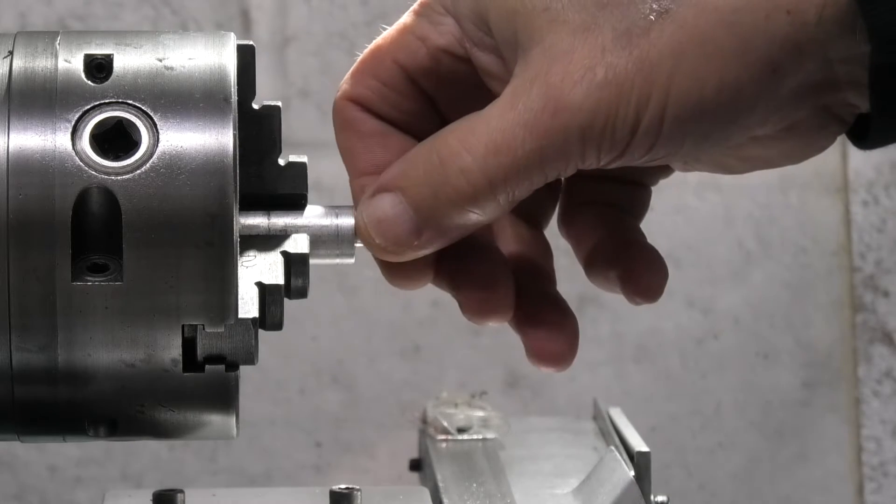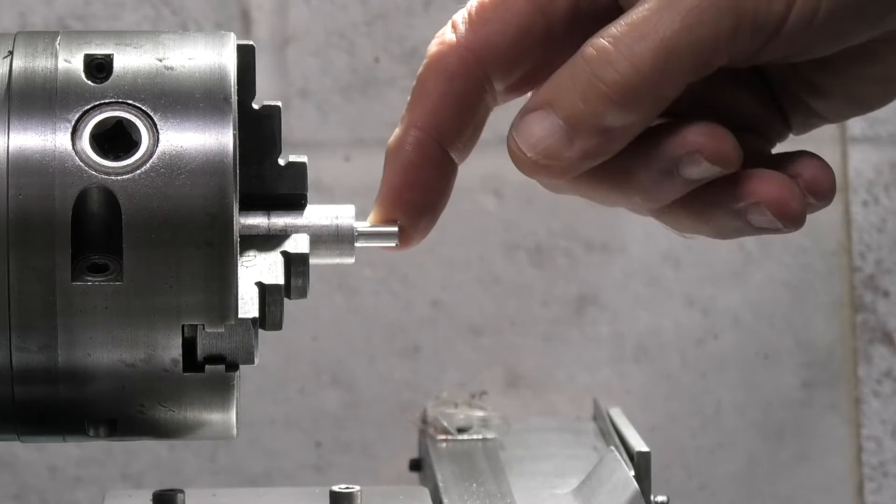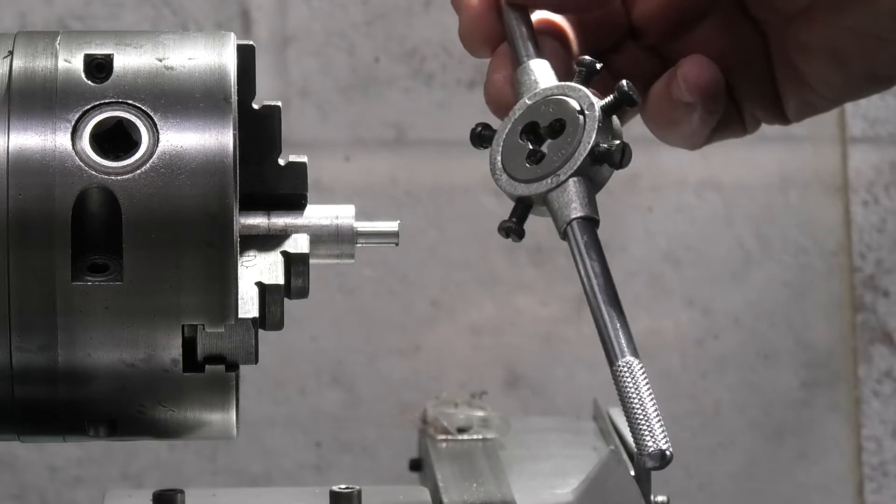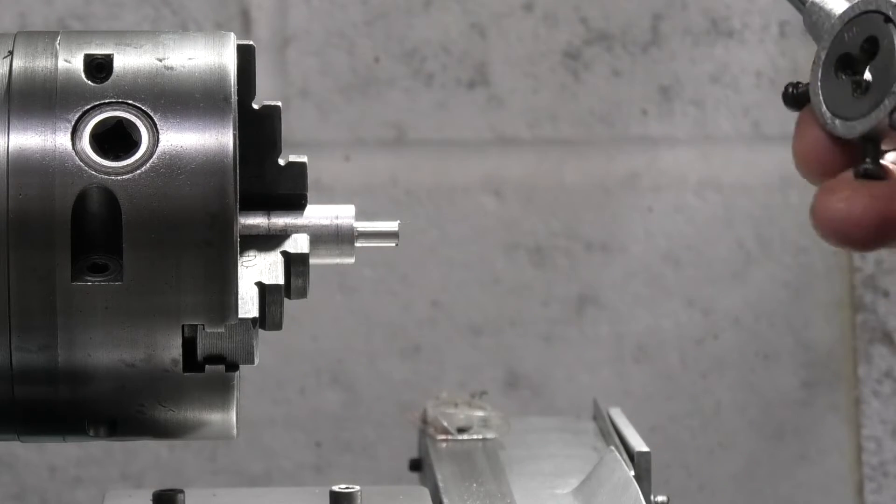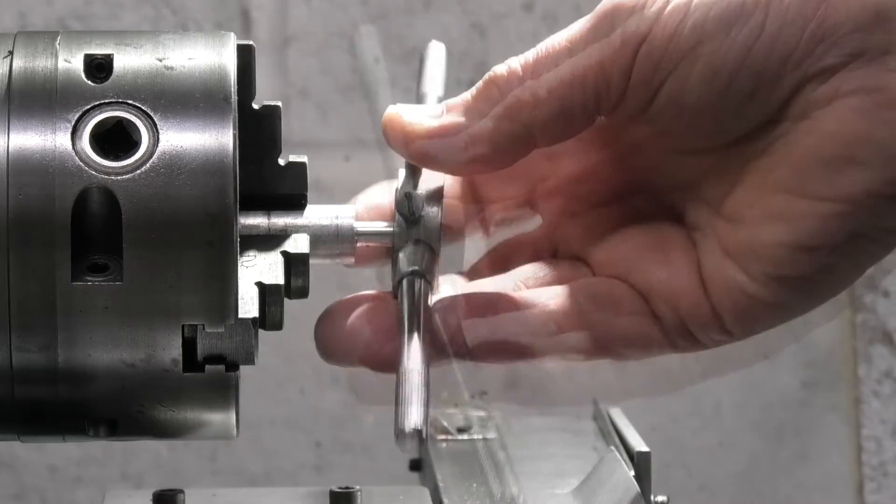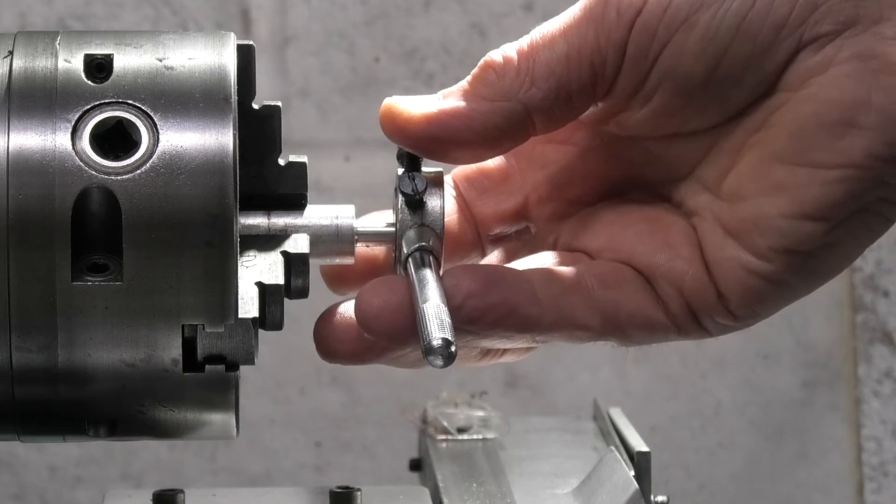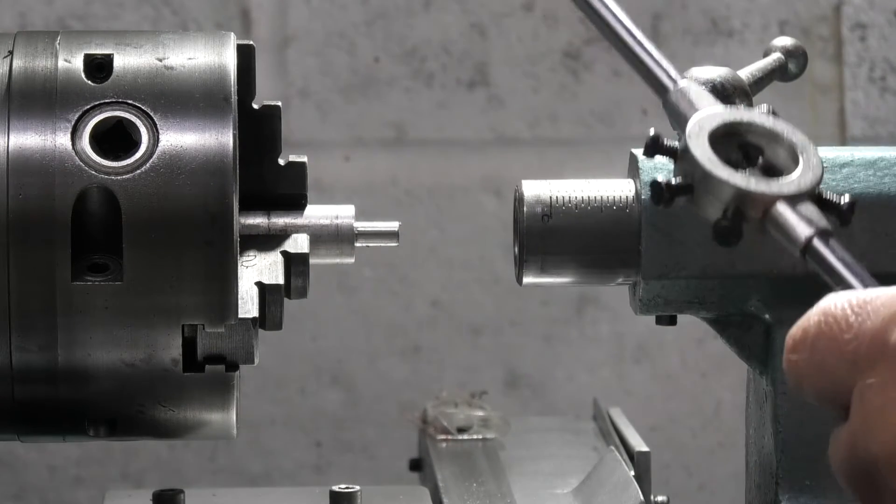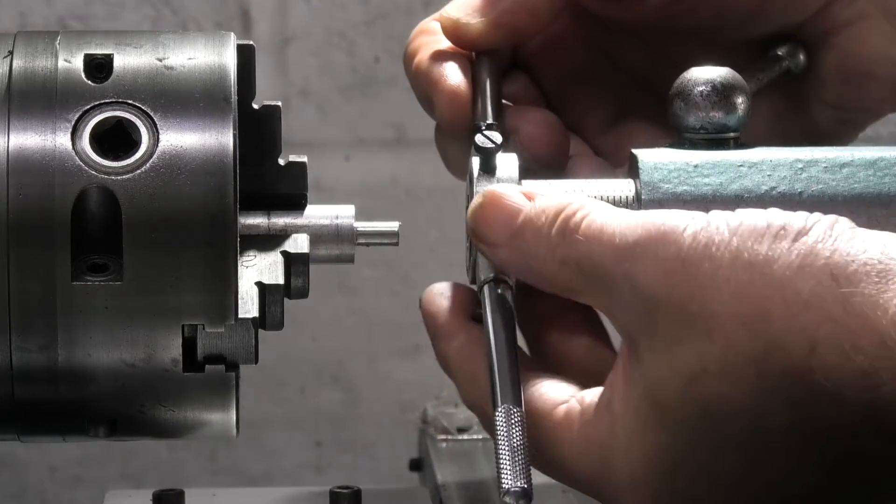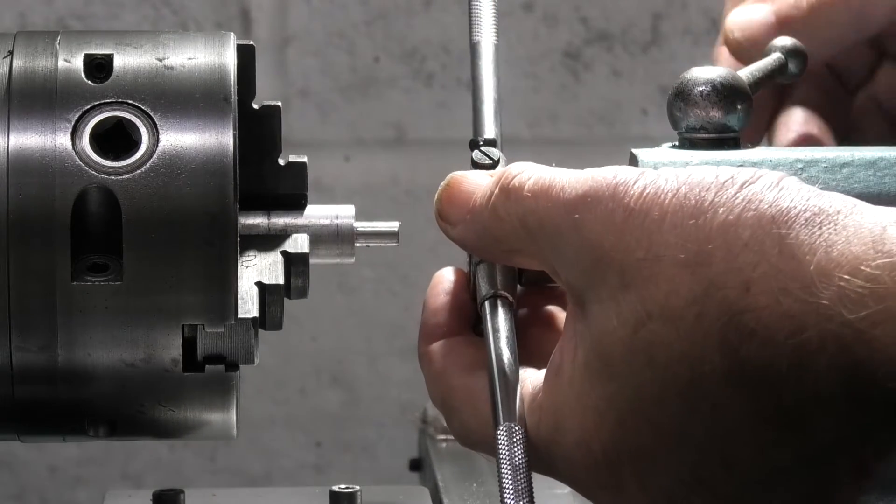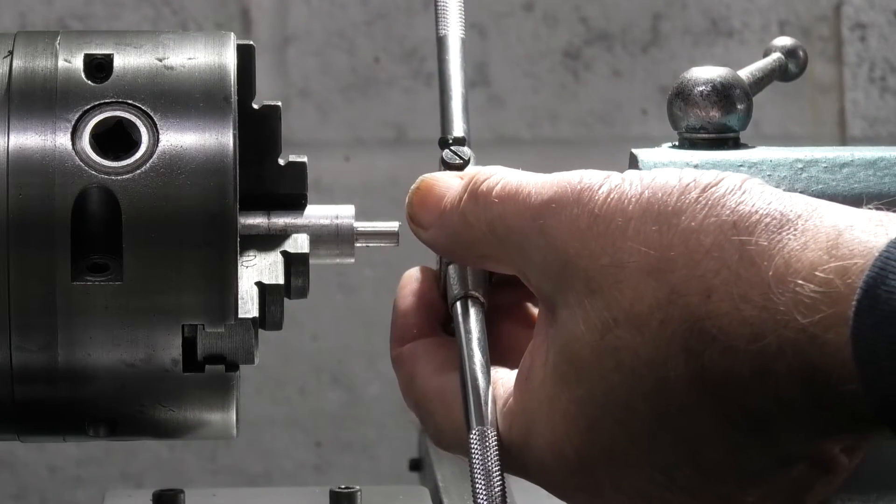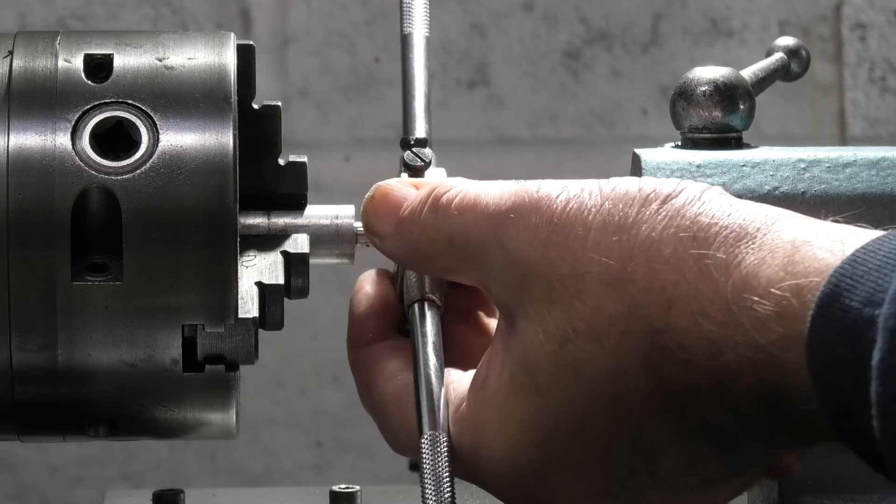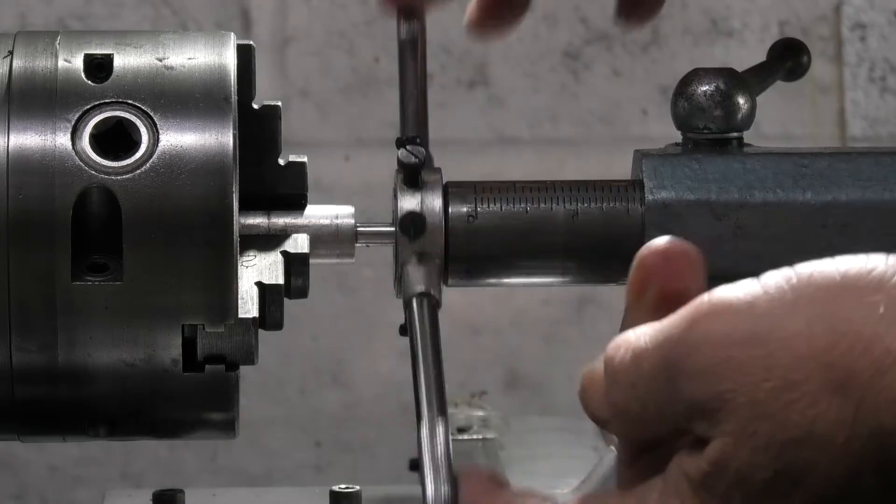Now let's say that you want to cut a thread on the end of this six millimeter bar. Most people would use a die in a die holder, but in the lathe the first problem you have is you need to get the die holder square to the end of the shaft. Easy way of doing that is bringing the tailstock in holding the die on the end of the tailstock. Wind the tailstock in and that will present the die square to the workpiece.